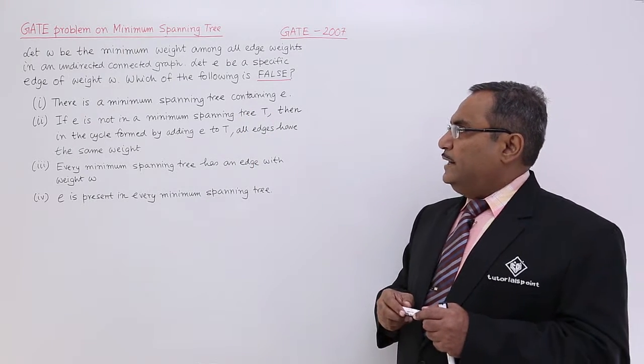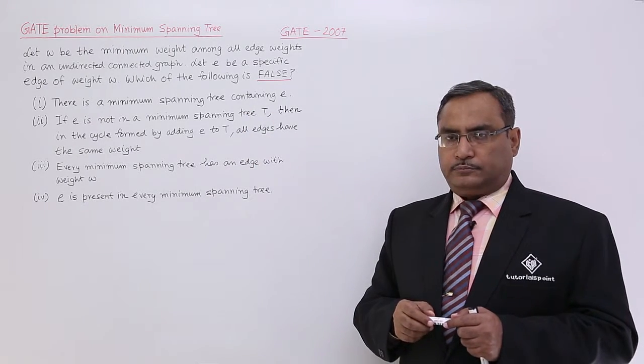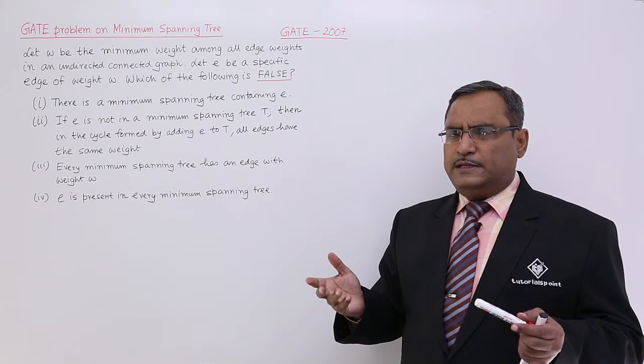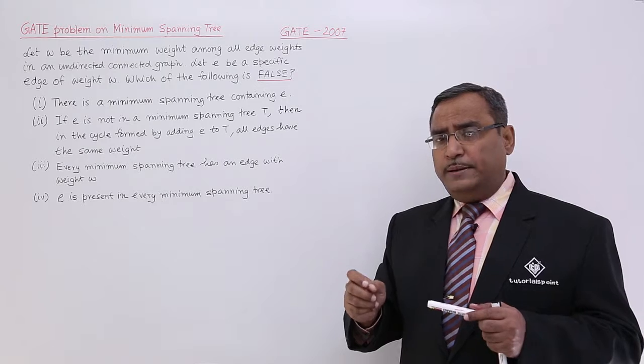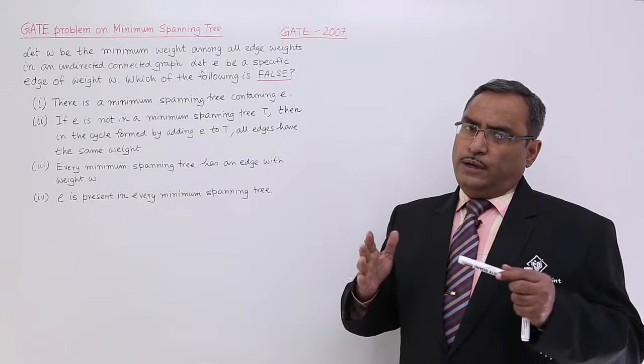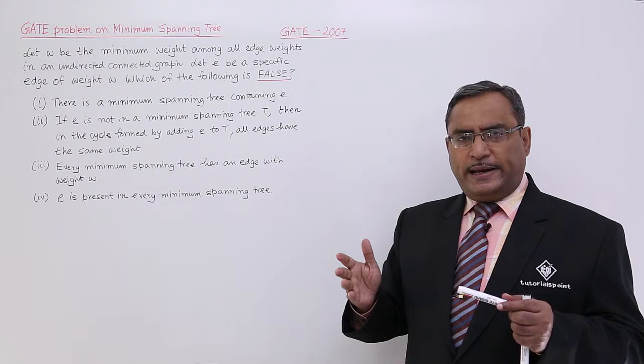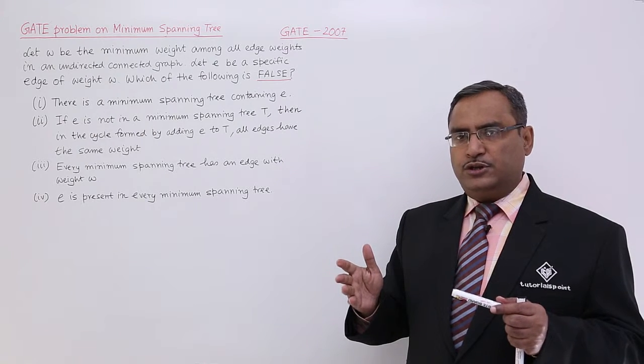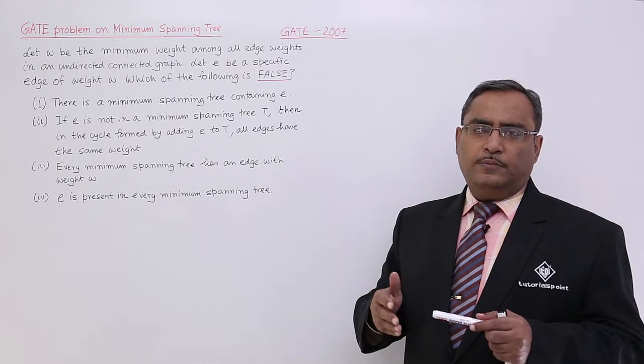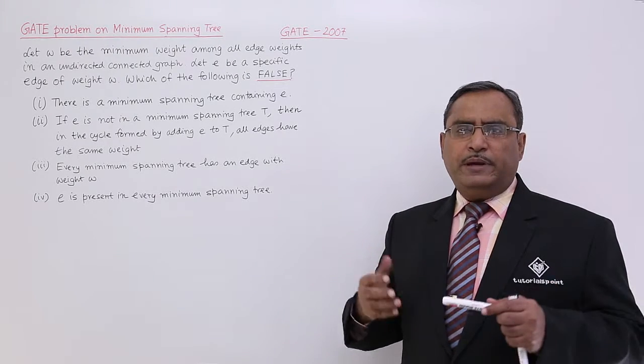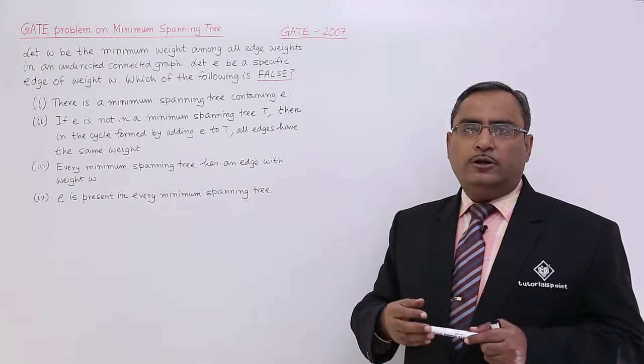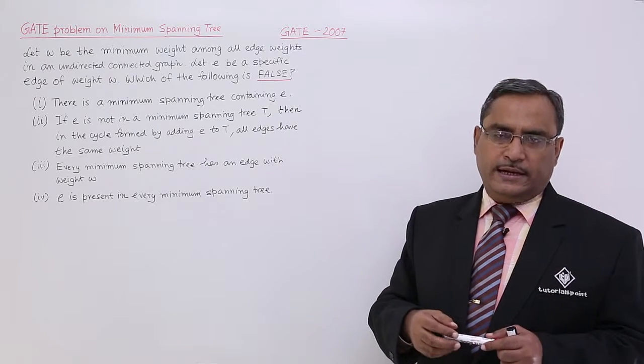There is a minimum spanning tree containing E. Yes, in a spanning tree construction as E is that very edge containing minimum weight. A graph can have multiple minimum spanning trees, it cannot have a unique solution. Some of the minimal spanning trees might be containing E as one of its edges.